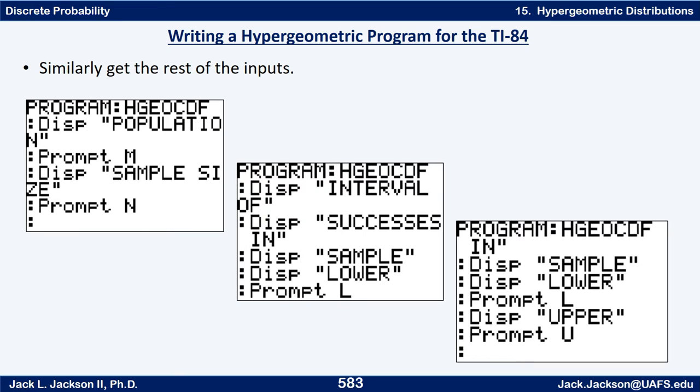And then interval of successes in sample, and then lower prompt for L, and upper prompt U. So it's going to find the probability that X is between L and U inclusive. So if you need to pause at this point and see what we have here, see if you can get this much typed in and see if you can catch up with me and come back to this when you get caught up. Press pause now.